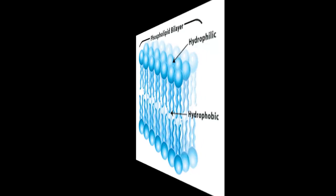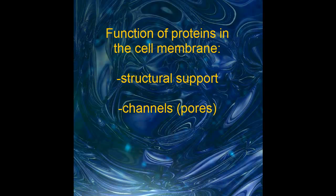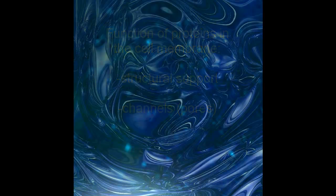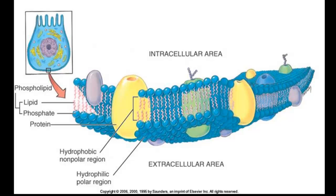Poking through at random places are these big globs of protein. The proteins have a couple of functions. One is they give structural support — kind of like rebar, the metal pieces that go through cement to make it stronger. Some of the proteins — not all of them — have pores or channels that go through the center. See how this one looks like a bead with a hole through the center? That creates pores or channels for things to pass through the cell membrane. So the proteins either provide structural support or provide holes and channels for things to get through.